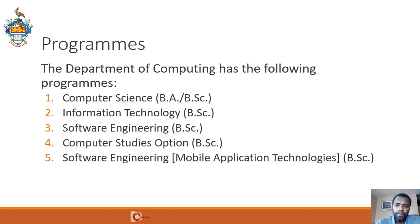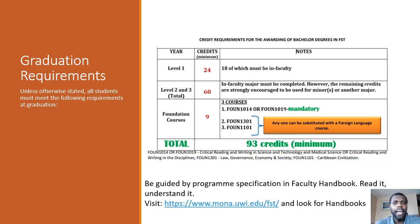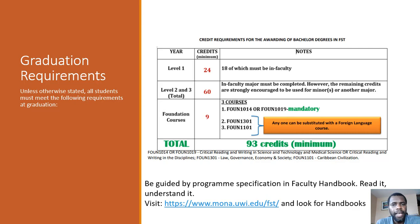You're beginning your academic journey at UWI, and it's important to know what the graduation requirements are. With the exception of the Software Engineering Mobile Application Technologies program, which is somewhat special, all our other programs will require that you have a minimum of 93 credits at graduation. Of these credits, 24 must be at level one — that's year one — and of those 24 credits, 18 credits have to be from within the Faculty of Science and Technology.